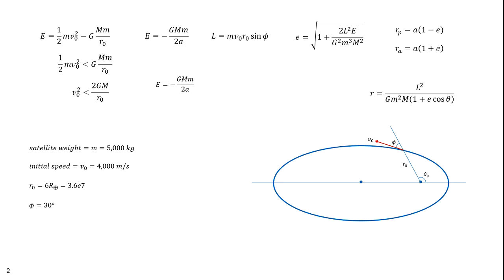E equals minus GMm over 2A. A thus equals minus GMm over 2E. E equals one-half MV0 squared minus GMm over R0. We know all these variables. M is 5,000 kilograms. V0 is 4,000 meters per second. G is 6.67284 times 10 to the minus 11th. M is 5.92 times 10 to the 24th. And R0 is 3.7 times 10 to the 7th. If you plug in all those values, you get minus 1.6 times 10 to the 10th joules.